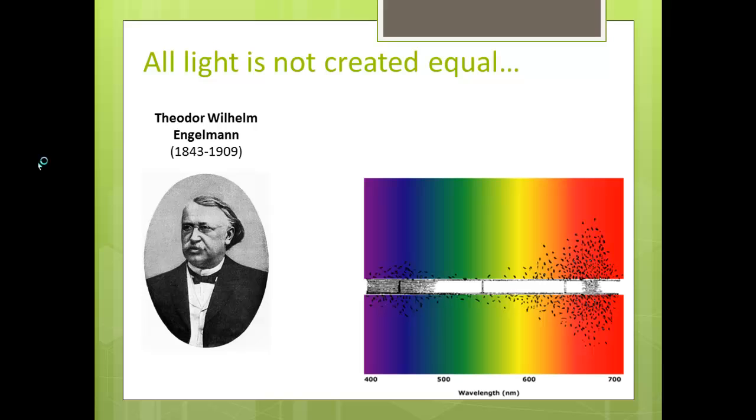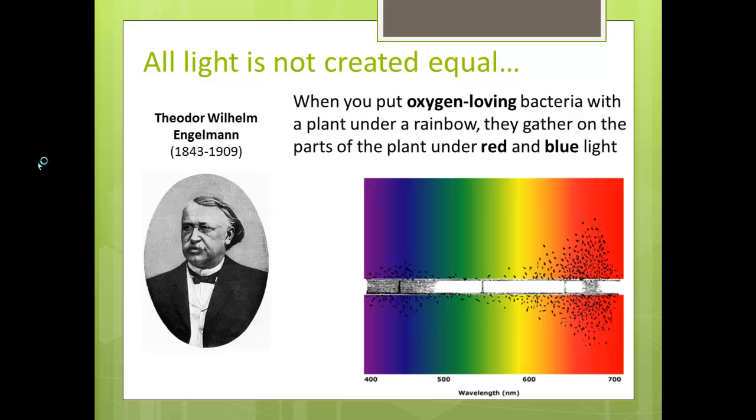He put that photosynthetic algae under a rainbow light, run through a prism—like those prisms in your car or bedroom that turn light into rainbows. The parts of the rainbow that made the plant do the most photosynthesis would attract the most bacteria. You can see these oxygen-loving bacteria gathered the most under the red light and a little more under the blue light. There's practically no bacteria under the green and yellow light. He figured out that red and blue light were best for producing oxygen, especially red light.